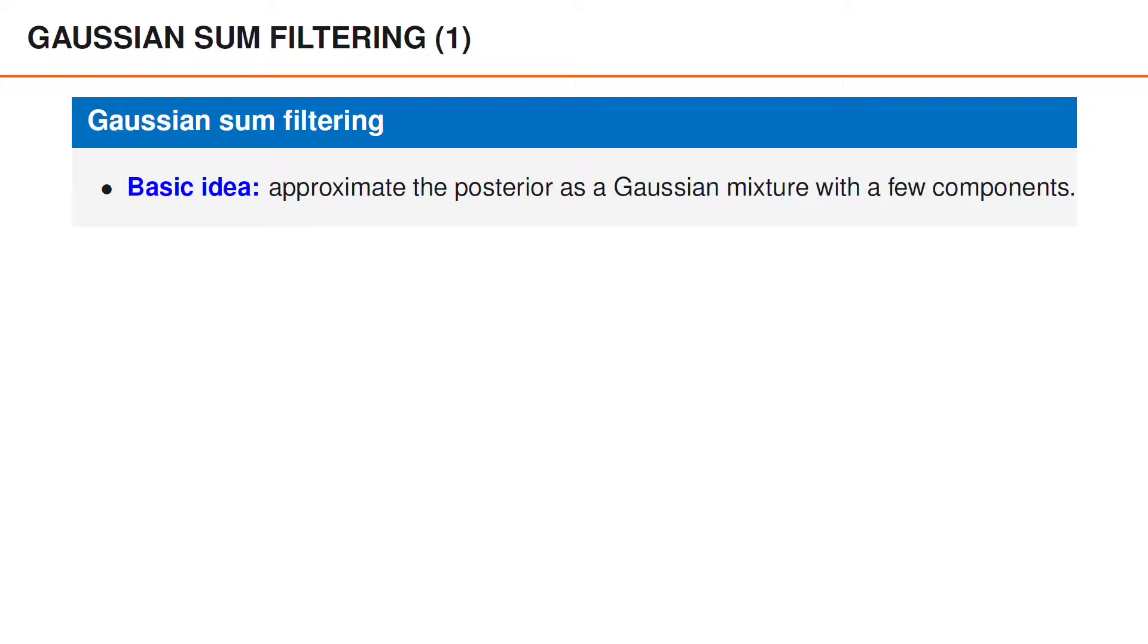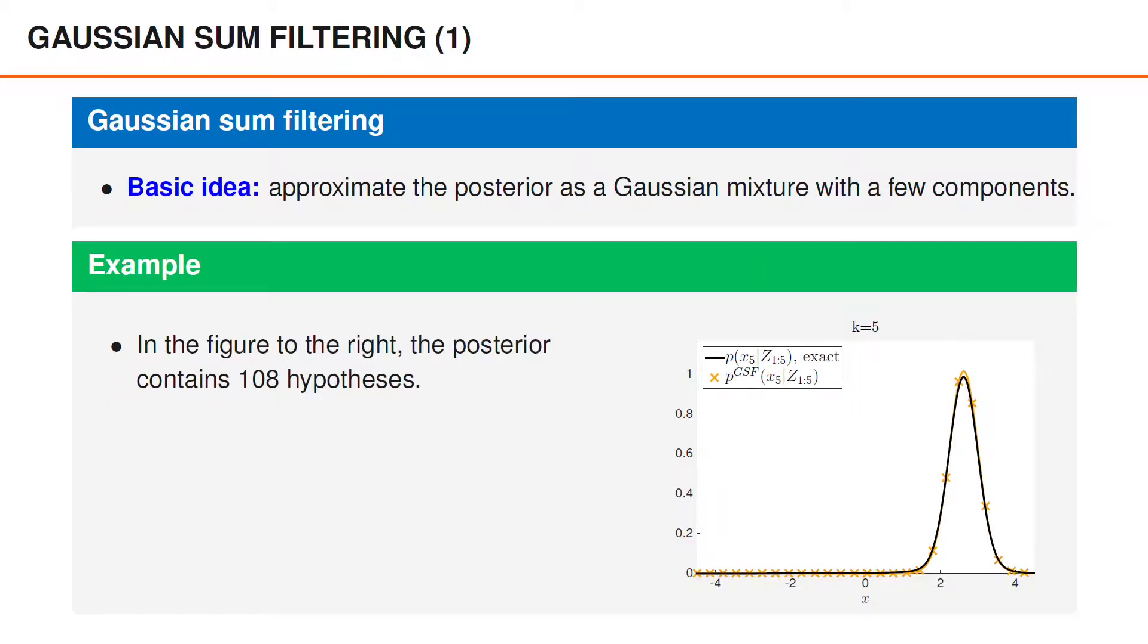The basic idea behind Gaussian sum filtering is to approximate the posterior using a Gaussian mixture with more than one component in order to obtain a better approximation. In many cases, the posterior contains a very large number of components, or hypotheses, but the posterior may still be dominated by a small number of these hypotheses. And we can then approximate the posterior accurately by pruning all the insignificant components.